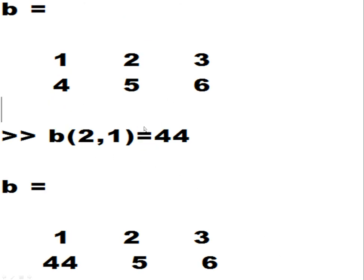Here's my b array again, and b, row 2, column 1 is 4. Assign the value of 44 there, and I get 1, 2, 3, 44, 5, 6.